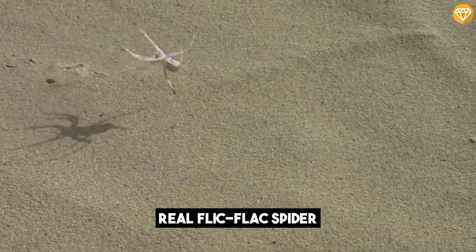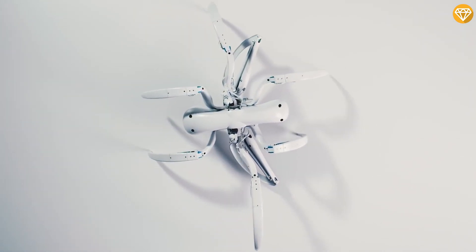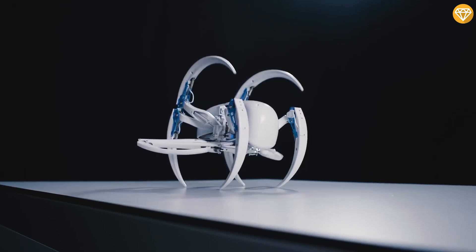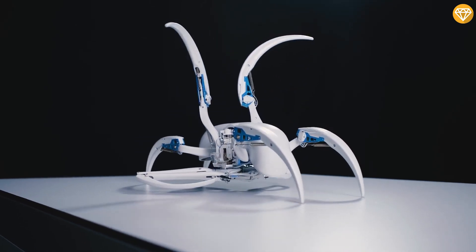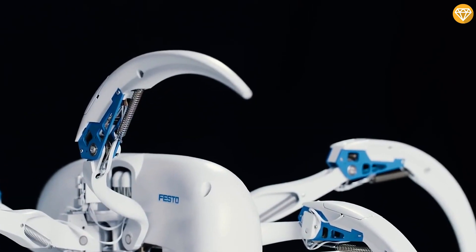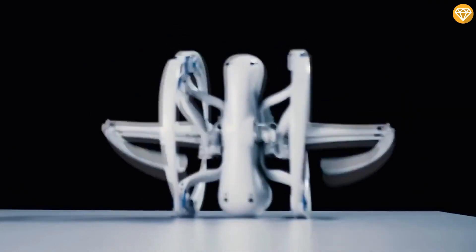When rolling, the Bionic Wheelbot performs somersaults like a real flick-flack spider, aided by an inertial sensor for precise pre-positioning and propulsion. It exhibits a tripod gate, walking with six legs while keeping the remaining two push-off legs folded. A spring mechanism in each knee and shoulder joint enhances leg movement efficiency.